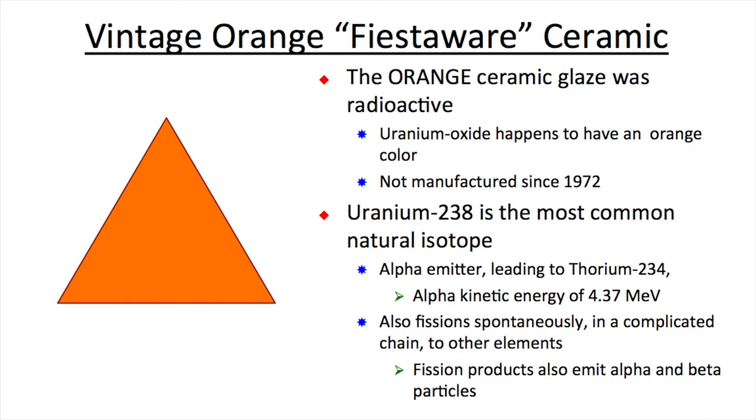Uranium-238 is the most common natural isotope of uranium, and it is an alpha emitter emitting a 4.37 MeV alpha particle, and it also fissions, and the fission products in turn can produce alpha and beta particles.